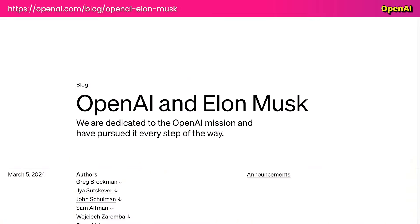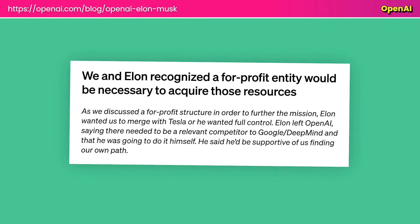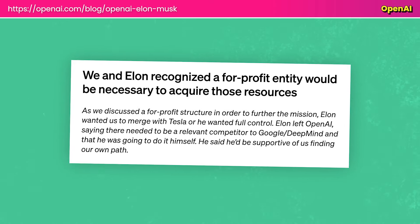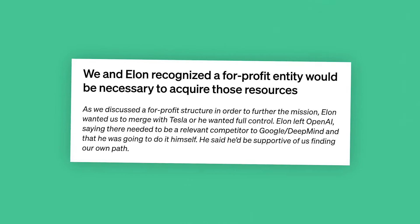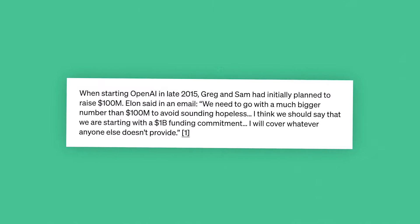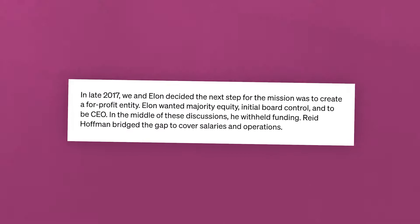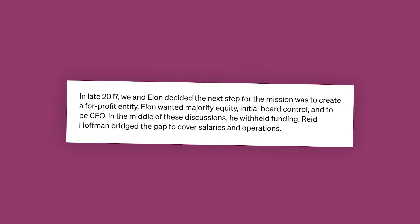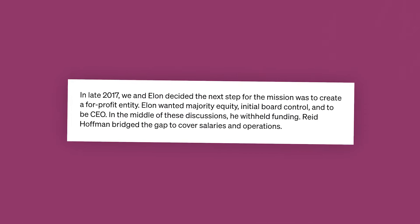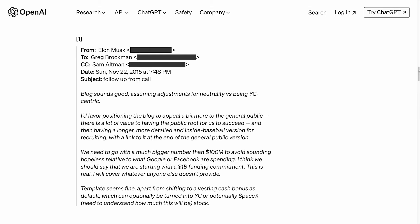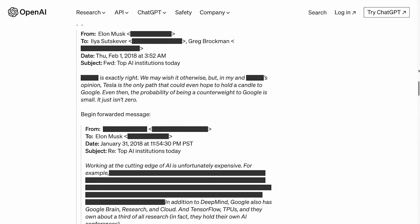The third blog post is titled 'OpenAI and Elon Musk' by several authors, primarily from the OpenAI team. It describes OpenAI's team and mentions Elon Musk's initial involvement, where he told the team in 2015 that much more than the initial $100 million the team was planning to raise would be needed — at least $1 billion. Further below, it mentions that the next step in 2017 was to create a for-profit entity, where Elon wanted majority equity and to be CEO. In 2018, he left OpenAI stating there was zero chance of success.